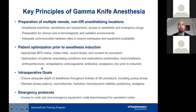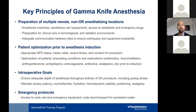The overall general key principles of gamma knife anesthesia involve preparing multiple remote non-operating room anesthetizing locations. That includes anesthesia machines, pediatric-specific anesthesia equipment, and immediate access to anesthetic as well as emergency drugs. The goal is to prepare each clinical environment for both ferromagnetic and radiation concerns, and to ensure adequate communication between sites to ensure workspace and equipment availability at all times.